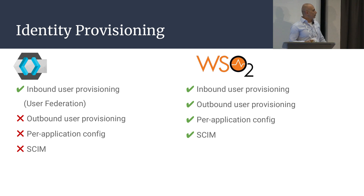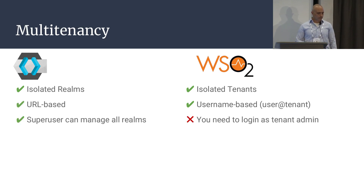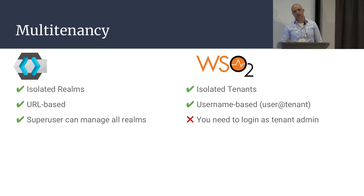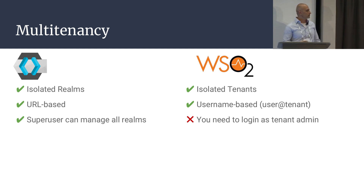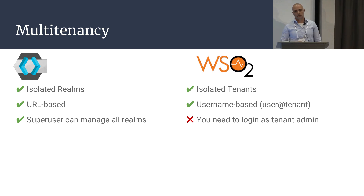WSO2 also has support for the SCIM protocol, which is a System for Cross-domain Identity Management. Multi-tenancy is a way of creating virtual identity servers within a single server instance, mainly for cheaper implementation. Both servers support this mechanism, although KeyCloak calls them Realms and WSO2 calls them tenants. KeyCloak also allows you to more easily manage different tenants, because with WSO2 you need to log in as a tenant admin every time you need to make changes to that tenant.